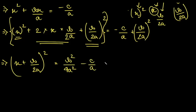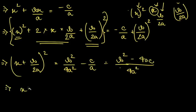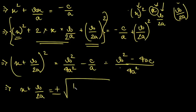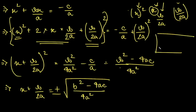Now we will simplify the RHS a bit. The common denominator is 4a squared, and we multiply c by 4a to get minus 4ac. So the RHS becomes b squared minus 4ac divided by 4a squared. We know that root of a by b equals root of a divided by root of b, so taking the square root of 4a squared gives us 2a.